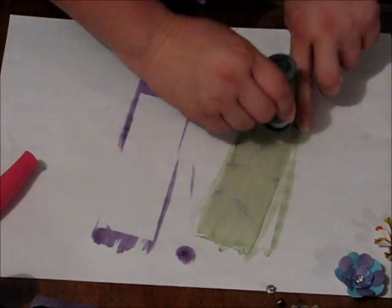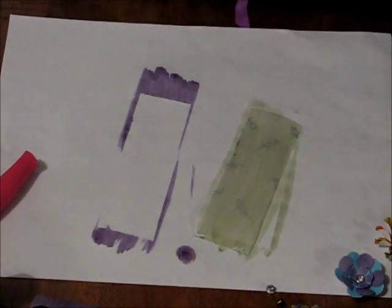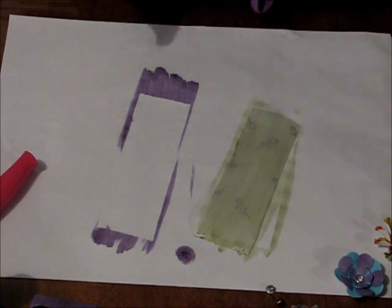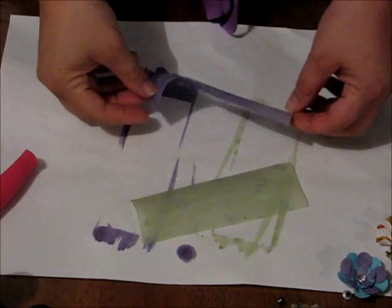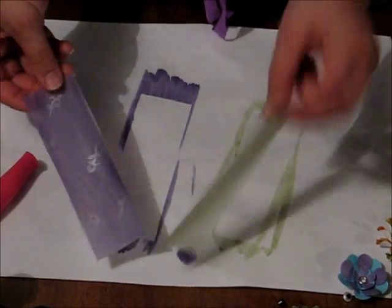Now you can leave them to dry naturally and they'll take a little bit of time. Or you can speed it up with a heat gun. I'm just going to do mine with a heat gun and I'll be right back. Okay, I'm back and I've finished drying my pieces of vellum.